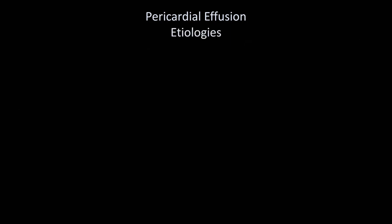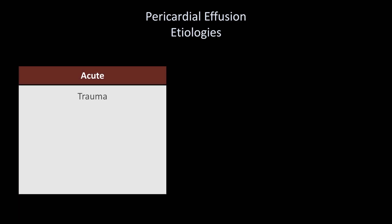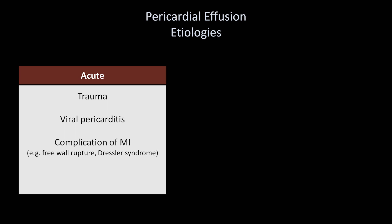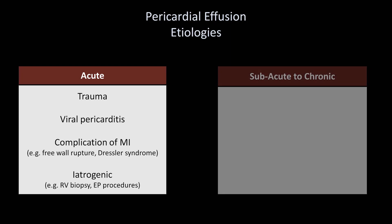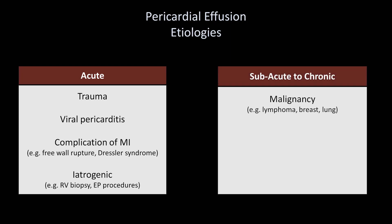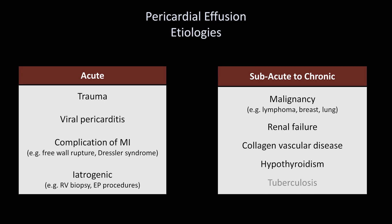There are many etiologies of pericardial effusions, which can be divided into those causing acute effusions and those causing subacute to chronic effusions. Acute effusions can be from trauma, viral pericarditis, a complication from myocardial infarction such as catastrophic free wall rupture, post-MI inflammatory Dressler syndrome, or iatrogenic causes from right ventricular biopsy or EP procedures. Subacute and chronic effusions are seen in malignancy such as lymphoma, breast, and lung cancer, but can also be due to renal failure, collagen vascular disease like lupus and rheumatoid arthritis, hypothyroidism, and tuberculosis — the major cause of pericardial effusions in some parts of the world.